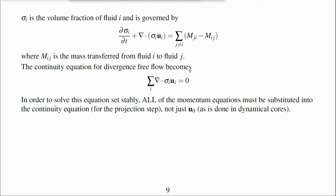The continuity equation in the multi-fluid Boussinesq equations is a constraint on the divergence summed over all fluids. In order to solve this equation set stably, all of the momentum equations must be substituted into the continuity equation, not just the grid box mean velocity.